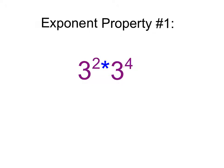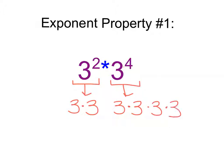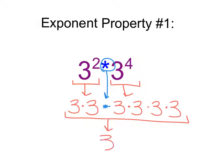We can figure out a shortcut by breaking down what an exponent actually means. You should know that 3 to the power of 2 is represented by 3 multiplied times itself 2 times — 3 times 3 equals 9. You should also know that 3 to the power of 4 can be represented as 3 times itself 4 times. When we multiply and expand those exponents out, we are multiplying six 3's together, which can be represented as 3 to the power of 6.